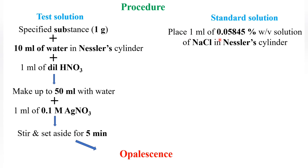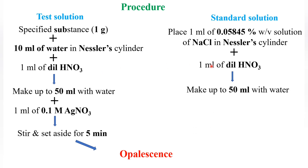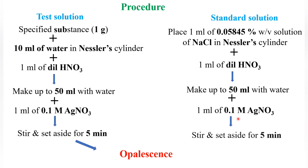For the standard solution, place 1 ml of 0.05845% w/v solution of sodium chloride in a Nessler cylinder — labeled 'standard.' After taking the sodium chloride, add 1 ml of dilute nitric acid and make up the solution to 50 ml with water. Then, the same as the test, add 1 ml of 0.1 M silver nitrate, stir the solution, set it aside for 5 minutes, and opalescence is also obtained here.